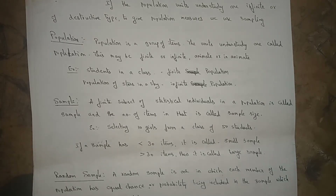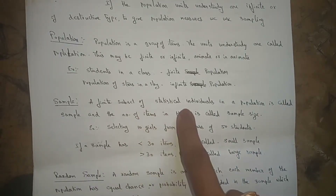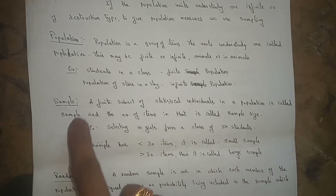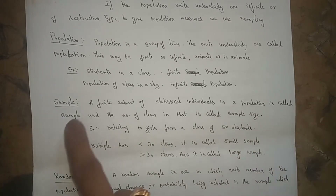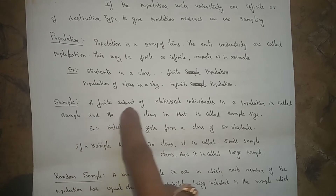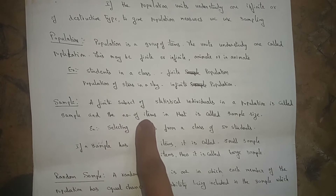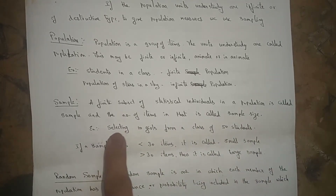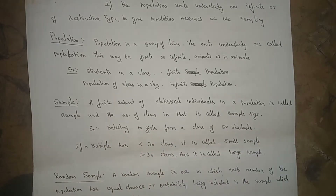What is meant by a sample? A finite subset of statistical individuals in a population is called a sample. That means from the whole items, a finite number of items that you select is called a sample. The number of items in that sample is called the sample size. For example, selecting 10 girls from a class of 50 students — the 10 girls are the sample.